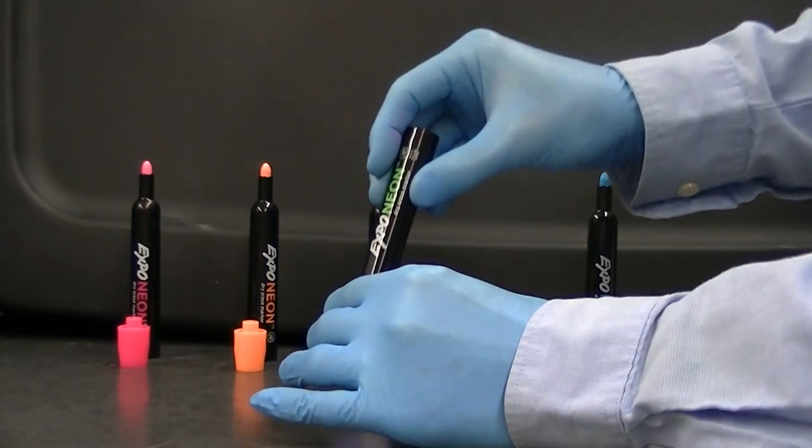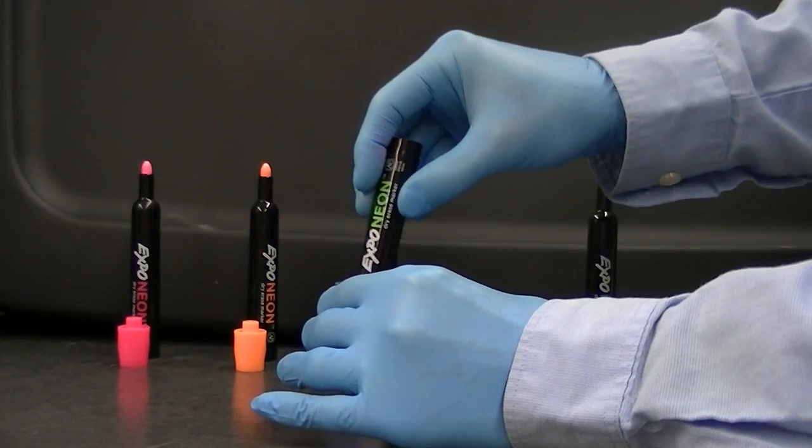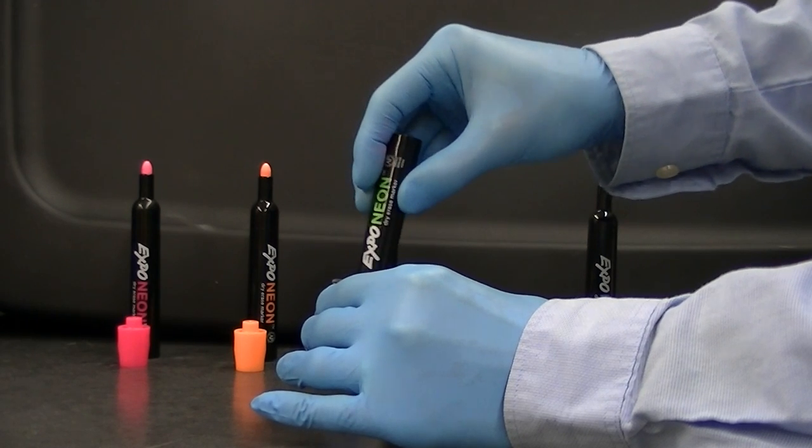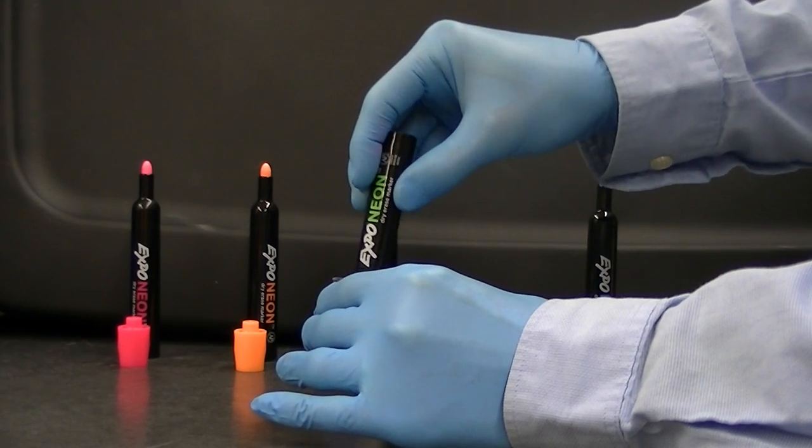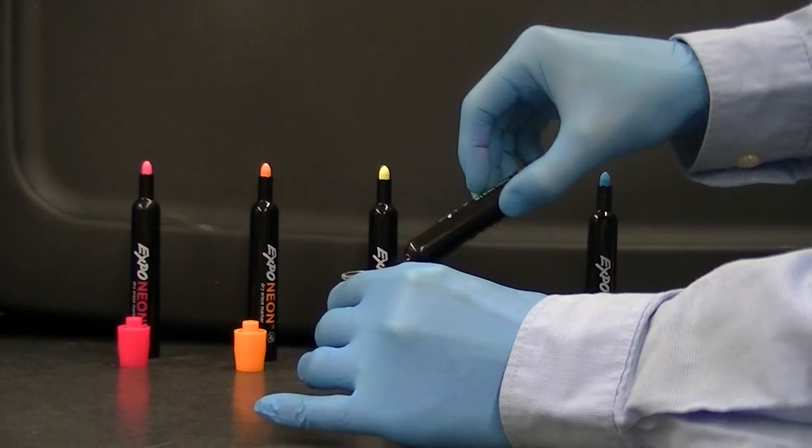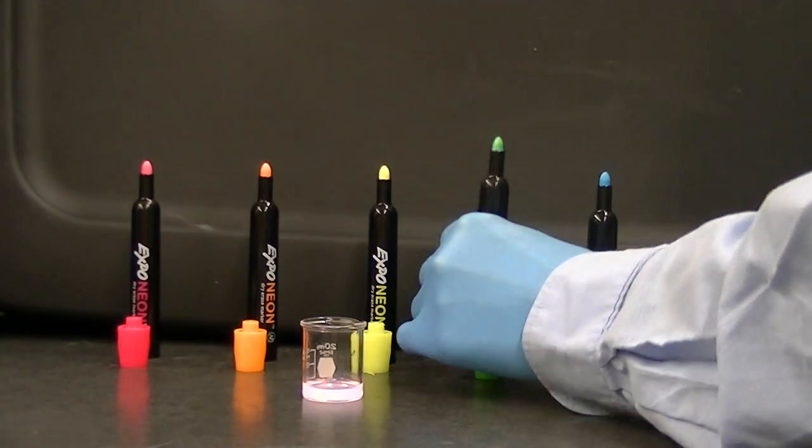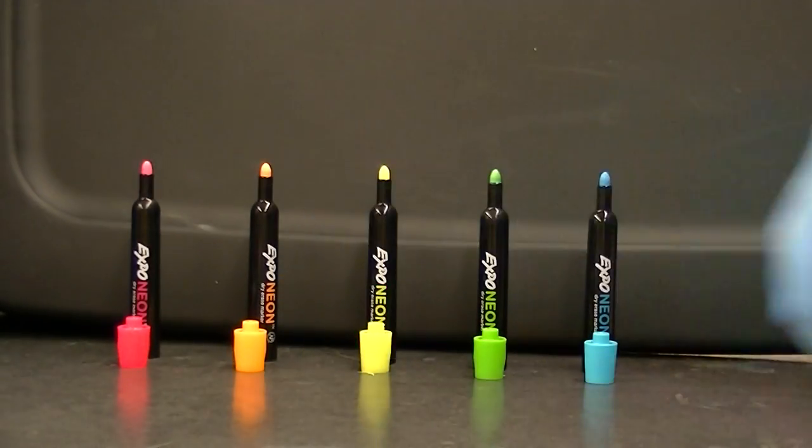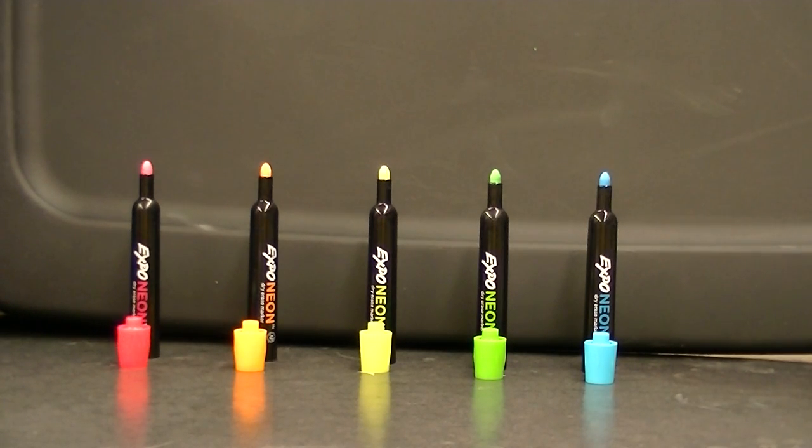And now the reactants from the light stick reaction should be providing chemical energy to the dyes in the marker tip, and that should cause these dyes in each marker tip to fluoresce with their characteristic color. Let's turn off the light and see how this works.